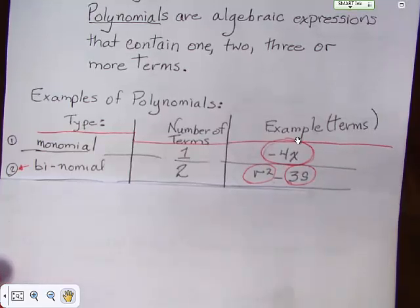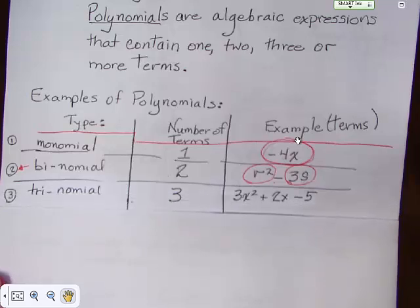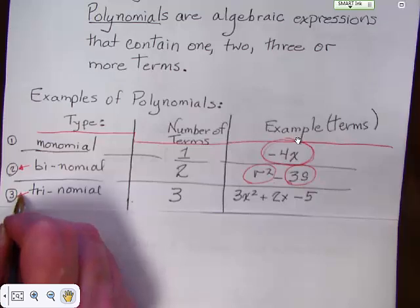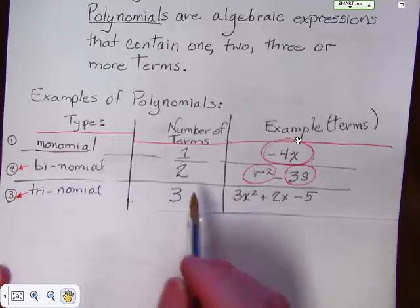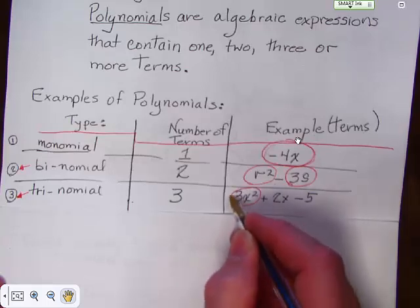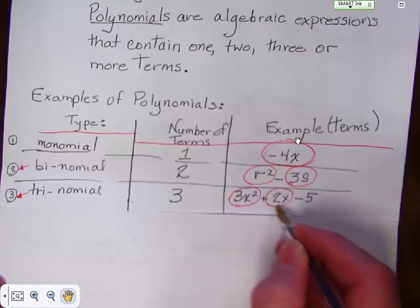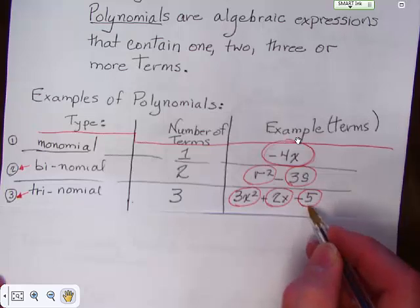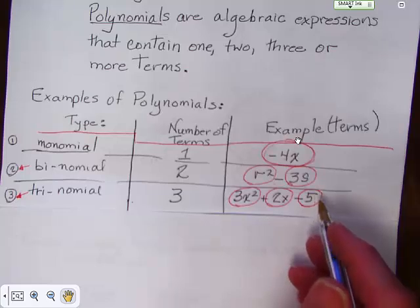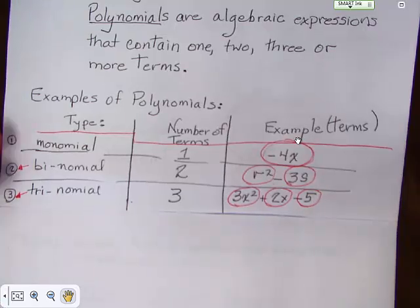But you can guess the next one. Yes. That's it. A trinomial. Tri means three. Three terms. And here are the three terms. Here's a term, here's a term, there's a term. Now, notice this 5 does not have an x with it. It doesn't have any kind of a variable with it, but it's still a term. It doesn't have to have a variable to be a term.